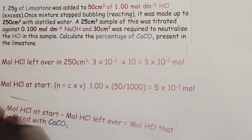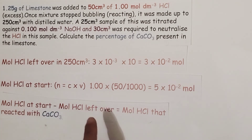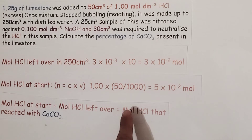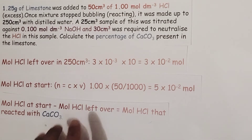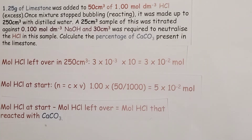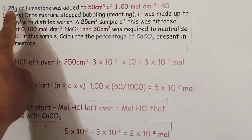We can now take away from the moles of hydrochloric acid at the start the moles of hydrochloric acid we know we have left, and that will give us the exact amount of moles of hydrochloric acid that was directly reacting with the calcium carbonate in that first reaction. In other words, if we take 5 × 10⁻² and subtract 3 × 10⁻², what was left over after the reaction, it tells us that only 2 × 10⁻² moles of hydrochloric acid were directly reacting with the calcium carbonate.